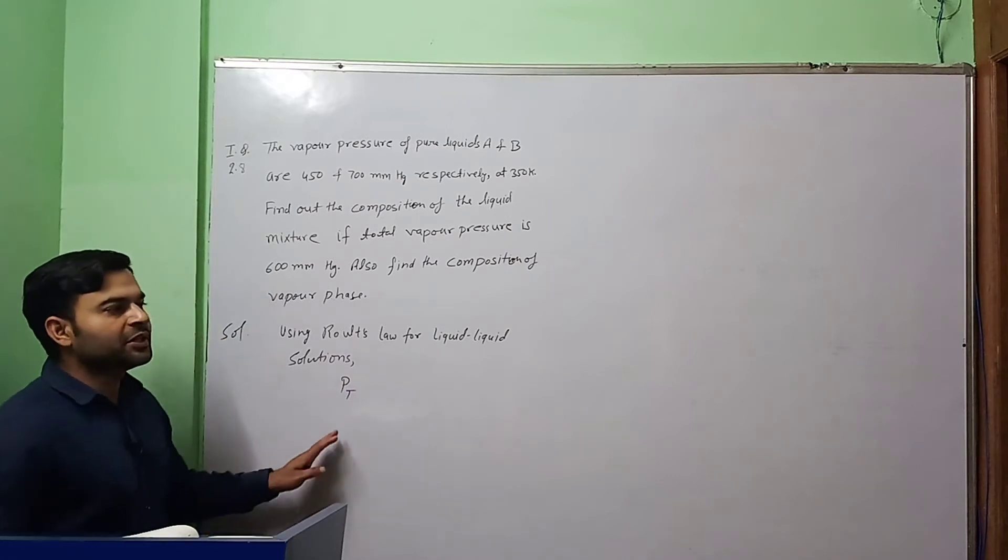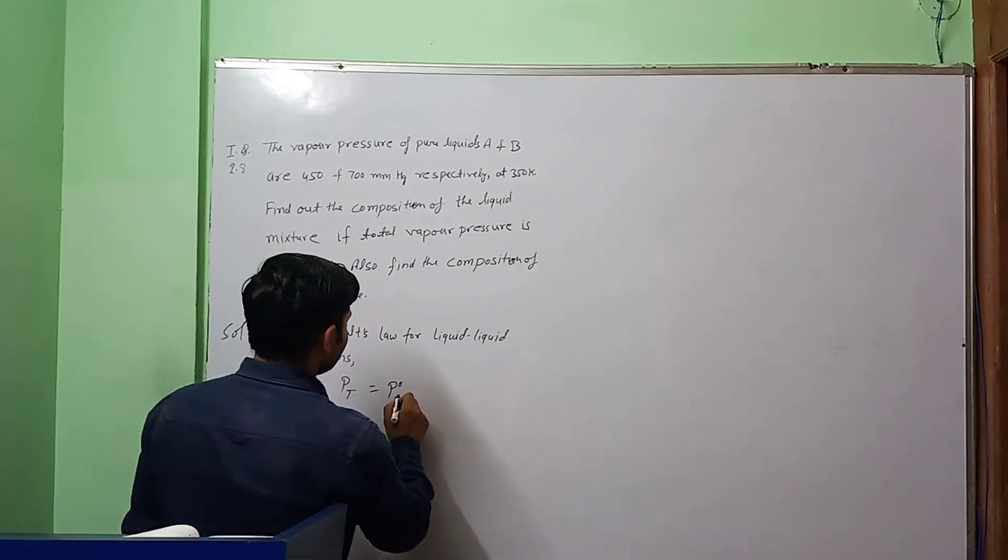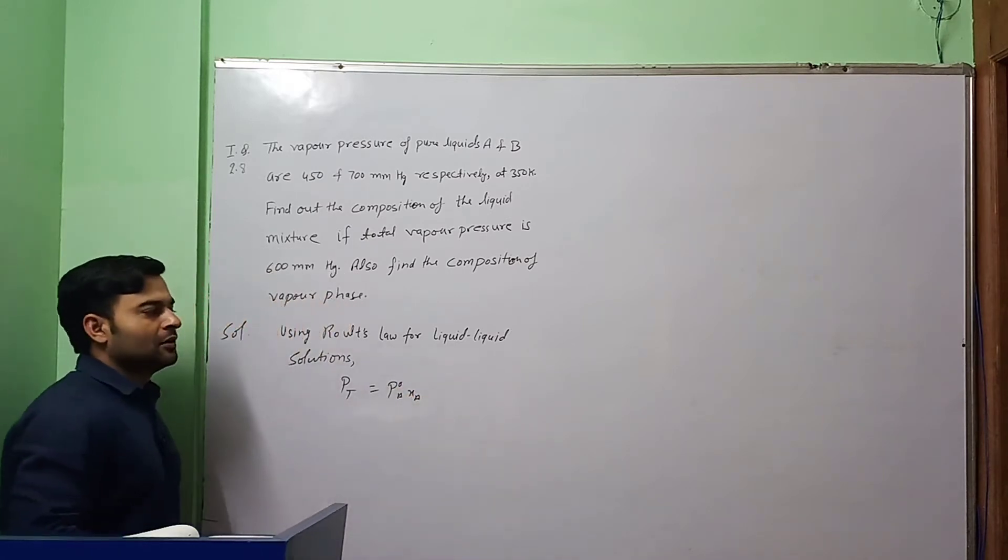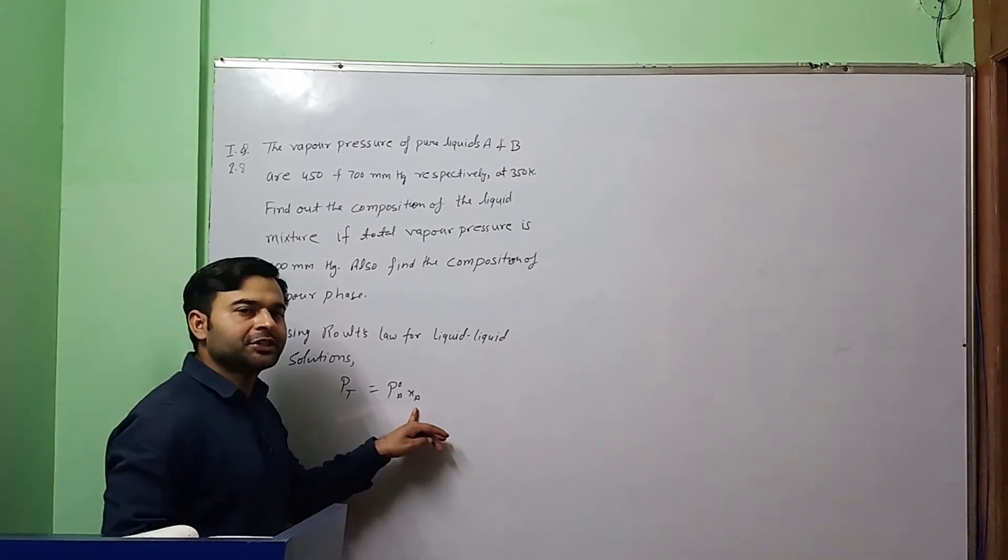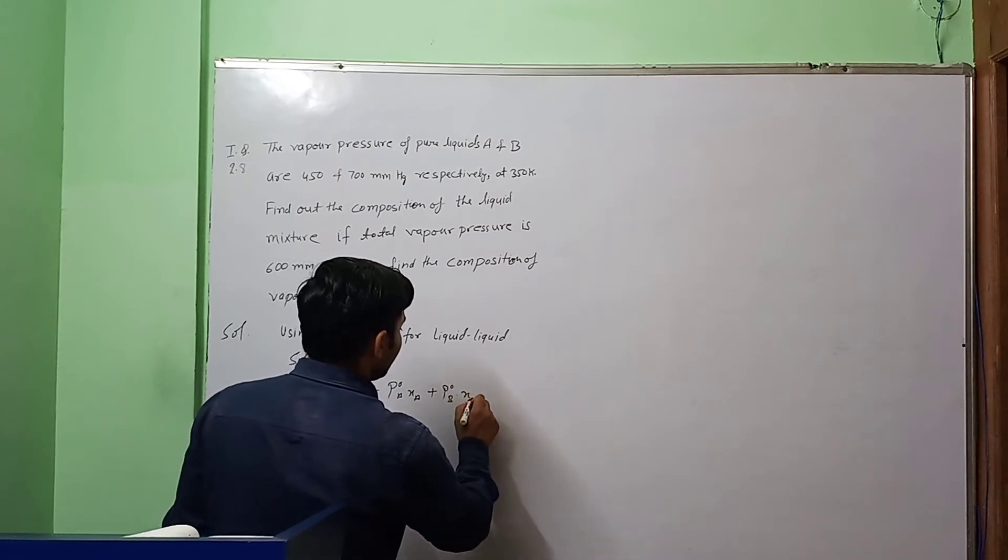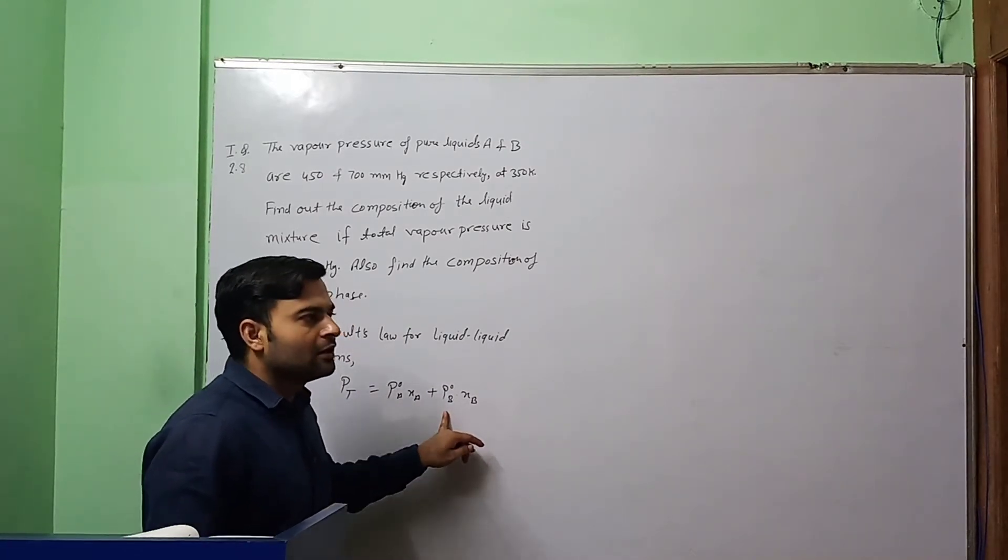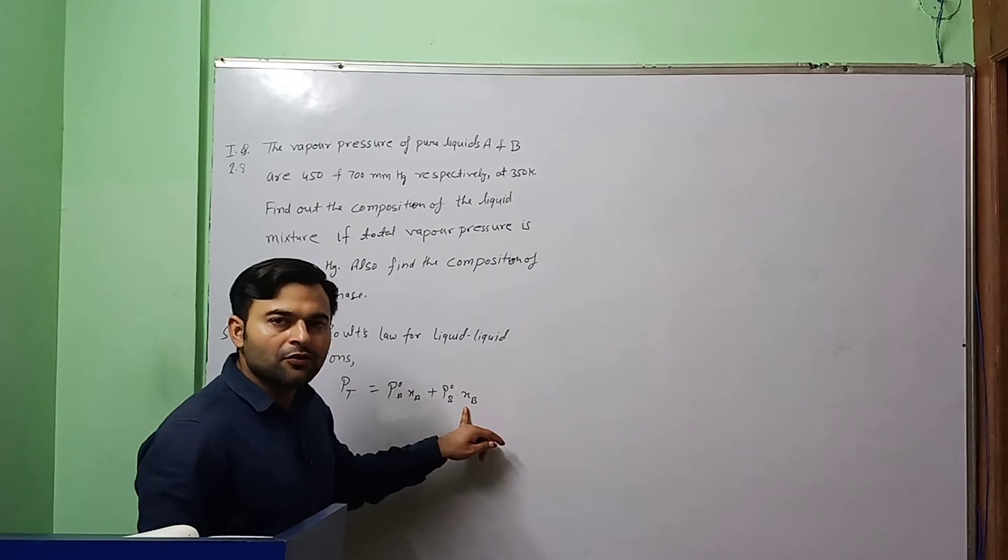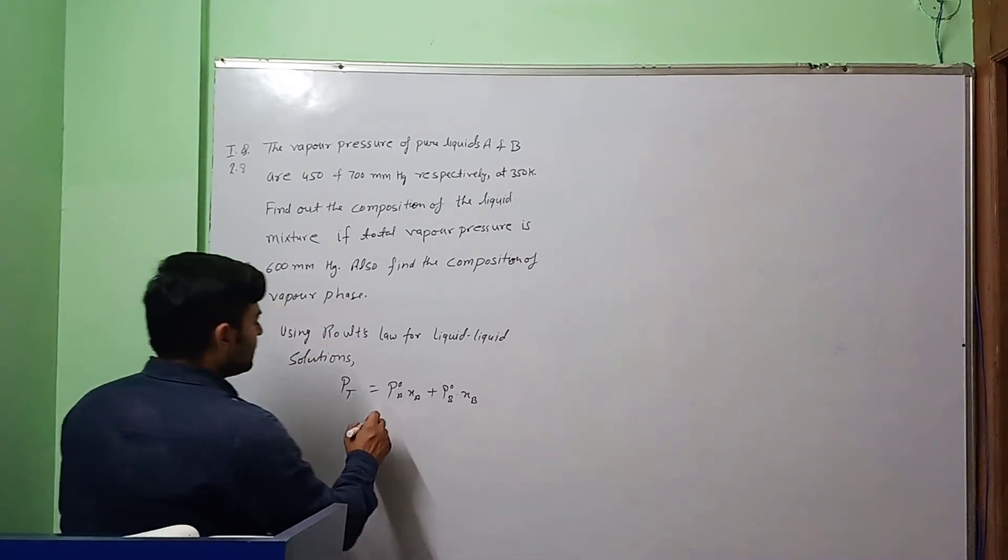According to Raoult's law, total pressure of solution Pt is given by P0A into XA. P0A is vapor pressure of pure component A and XA is mole fraction of A, plus P0B into XB. P0B is vapor pressure of pure component B and XB is mole fraction of component B.